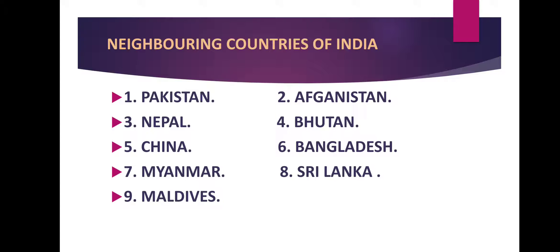To recap: in the northwestern part there is Afghanistan and Pakistan; in the northern part there is Nepal, Bhutan, and China; in the east there is Bangladesh and Myanmar; and in the south there is Sri Lanka and Maldives. These are our immediate neighbors. Now let's move to the next slide.